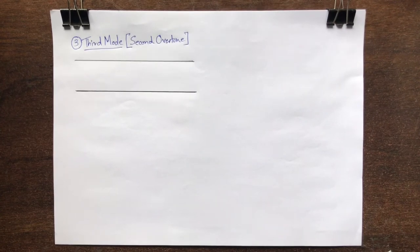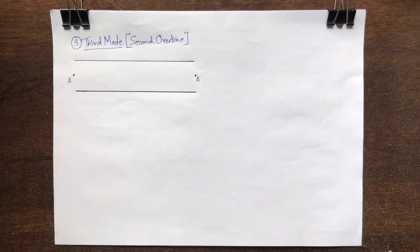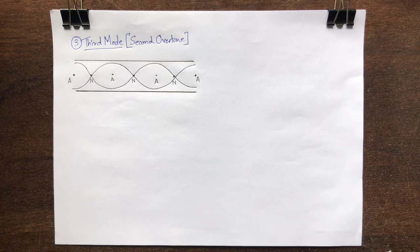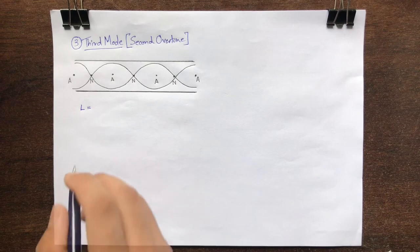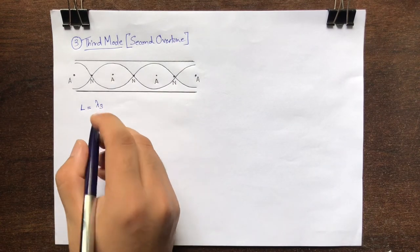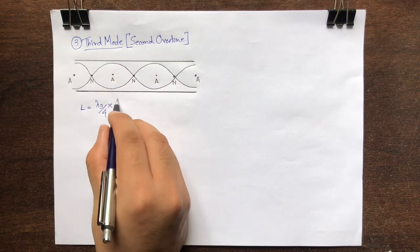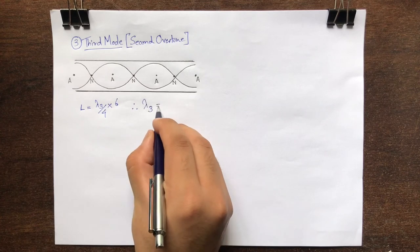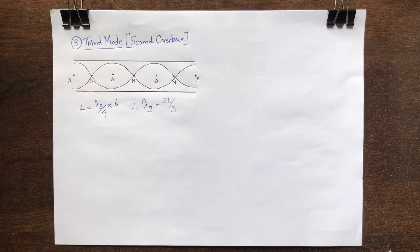Next is the third mode, also known as the second overtone. This mode of vibration is shown in the figure. Therefore, the length L of the considered organ pipe will be equal to lambda 3 by 4 times 6, that is lambda 3 is equal to 2L by 3.